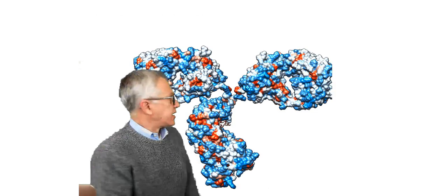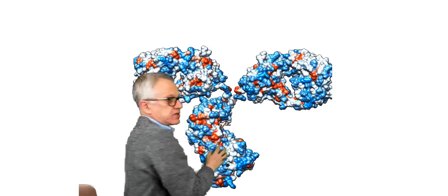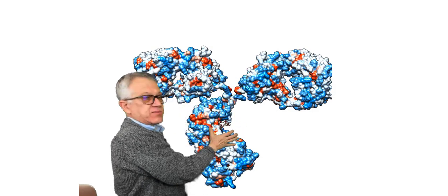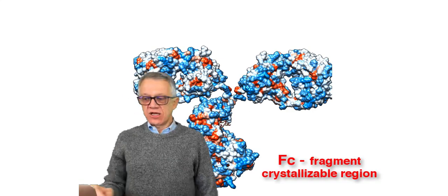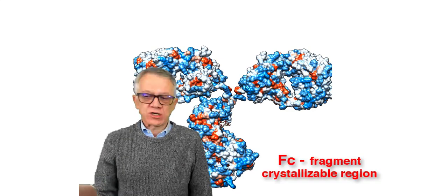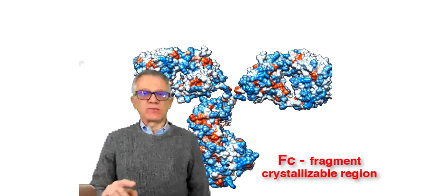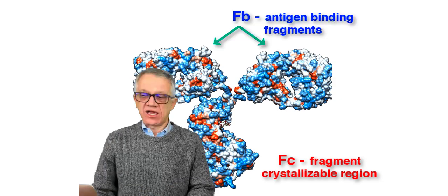Antibodies, as you know, have this Y shape where we have the fragment in the base and two fragments on the top. They are called the Fc for historical reasons, and the fragment on the top that binds the antigen is called the Fab.